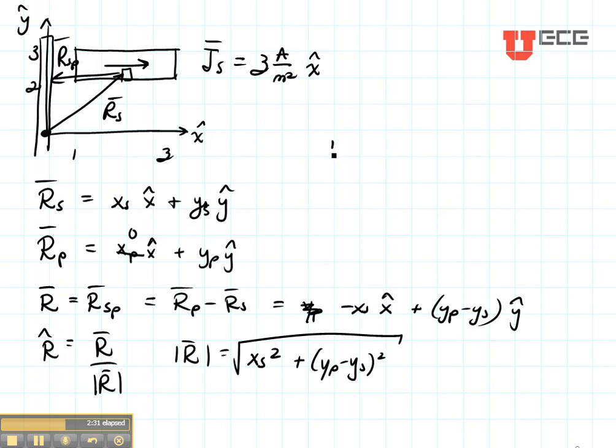The next thing that we need is our I. I in this case is JS DS. Let's figure out what DS is. DS is a little piece of surface right here on my rectangular cross section. So it is DXS and DYS. Now why did I put the S's down there?